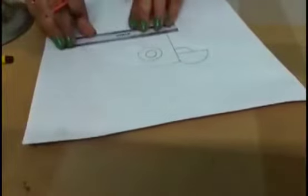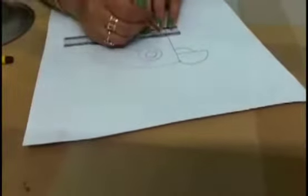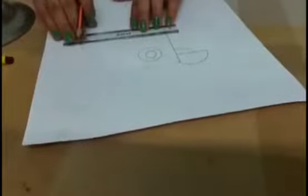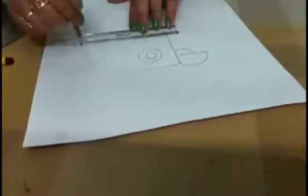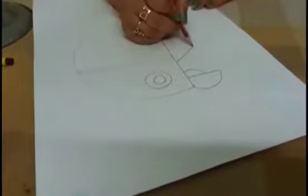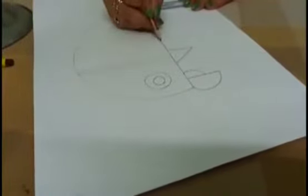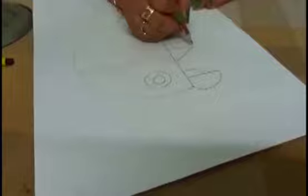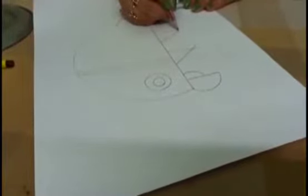Then for making a neck, you can make two lines, two adjacent lines like this. For making claws, you can make two triangles like this and two adjacent lines for claws.